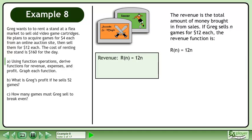The revenue is the total amount of money brought in from sales. If Greg sells n games for $12 each, the revenue function is R(n) = 12n.